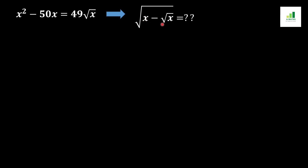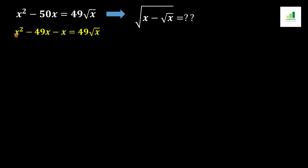In the first step, we should break -50x into -49x - x. In other words, this -50x can be written as -49x - x, and the other values of the equation, x² and 49√x, will remain the same.